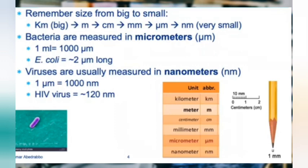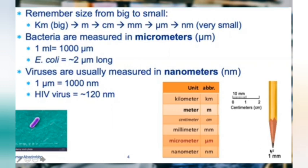Before we get into microscopes, let's talk about units of measurement. Kilometers are very big — outside the U.S. they use kilometers for driving distances. A kilometer is a thousand meter sticks. A centimeter you've seen on a ruler, and a millimeter is about the size of the point of a pencil.